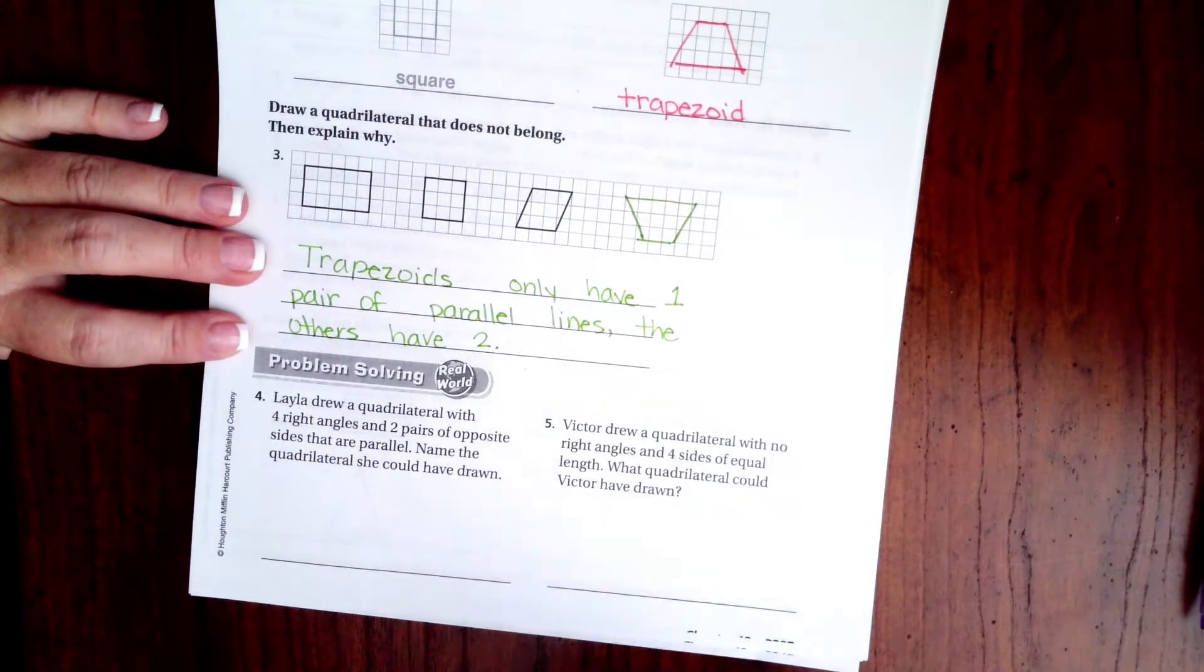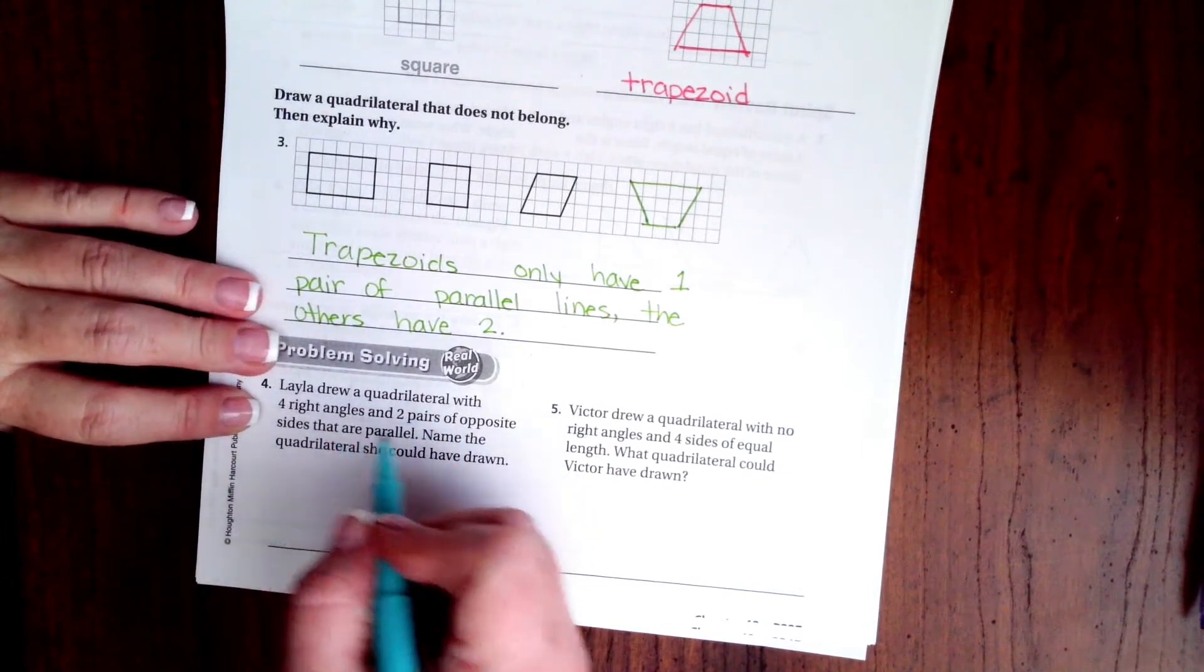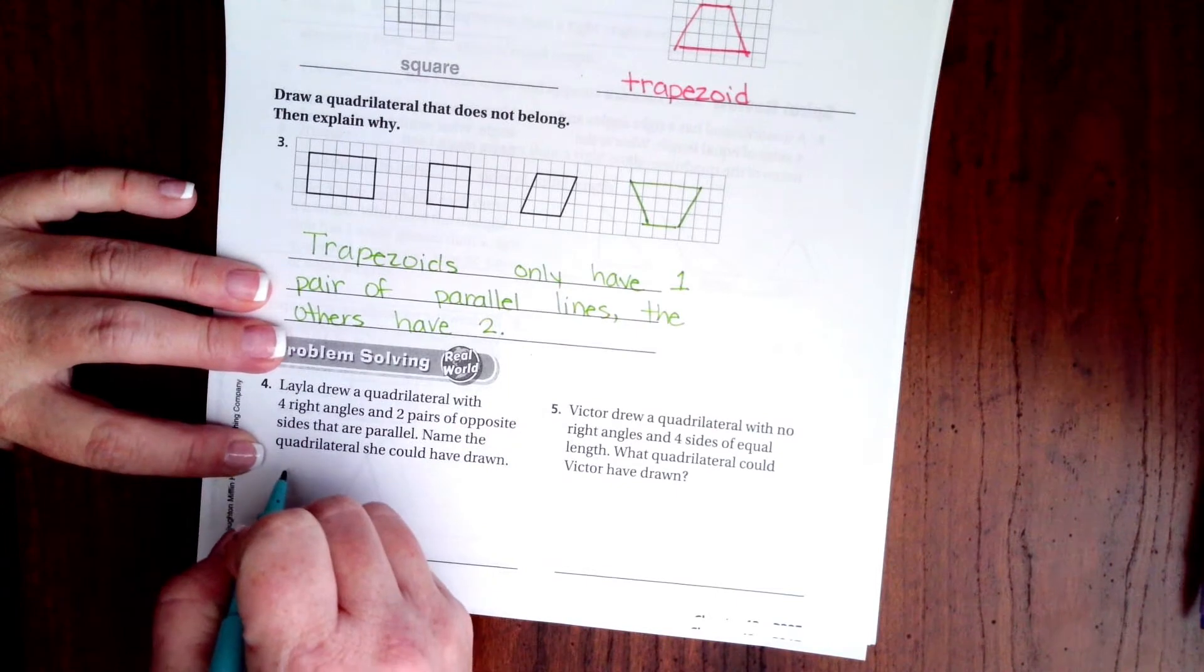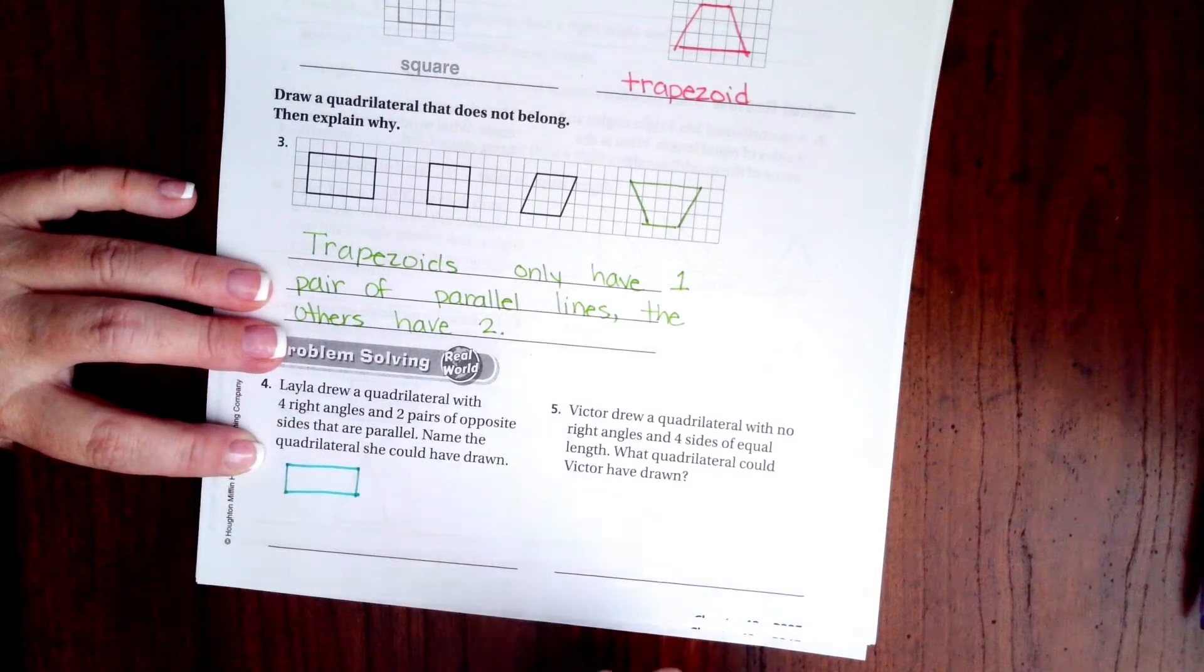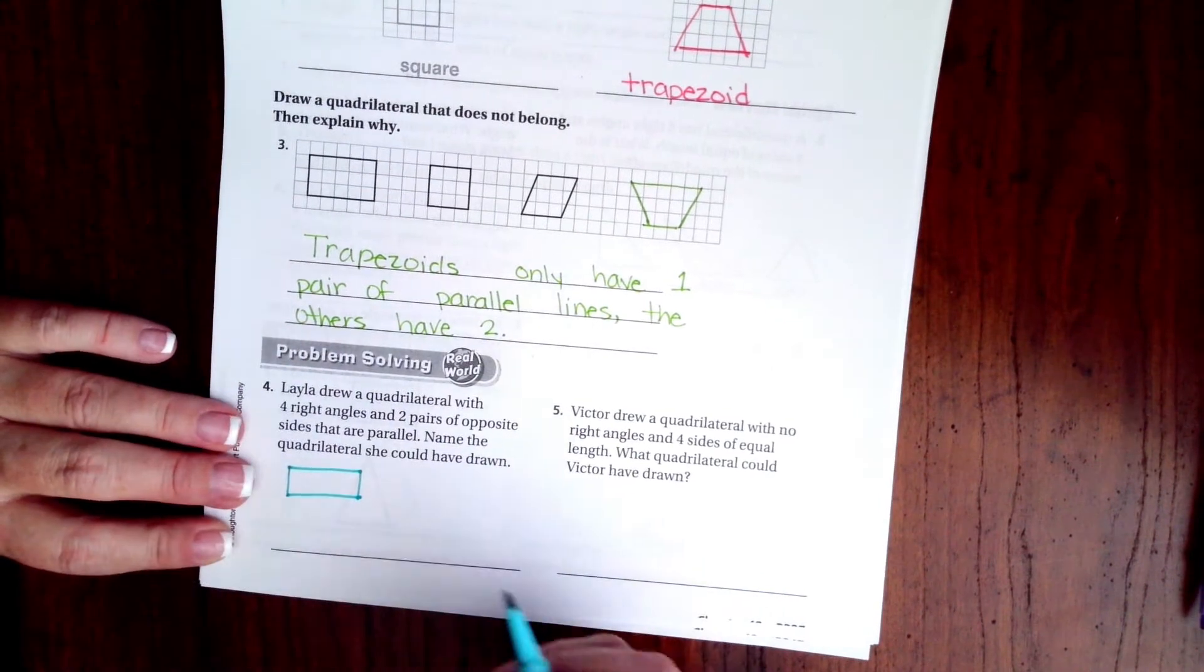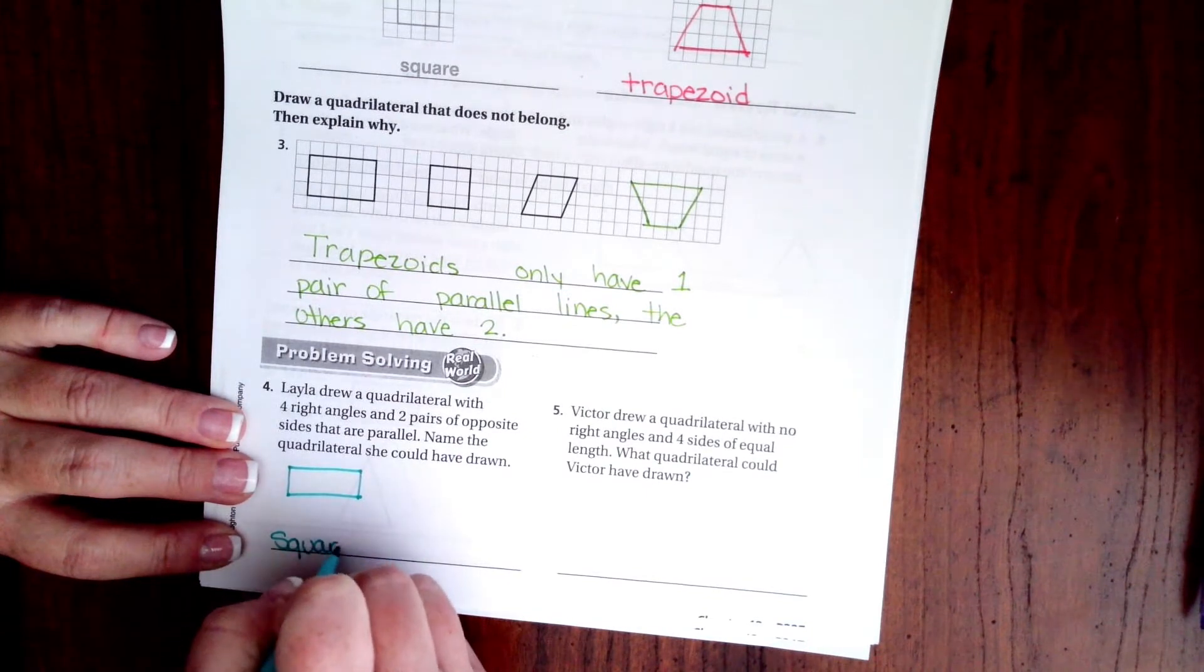It's not so bad. Layla drew a quadrilateral with 4 right angles and 2 pairs of opposite sides that are parallel. So 4 right angles, 2 pairs of opposite sides. Name the quadrilateral. Well what shape is that? It's a rectangle. Or it could be a square. We could put a square or a rectangle.